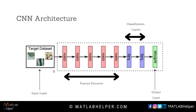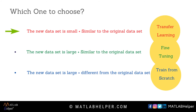Now let us see when to use transfer learning and when to use fine tuning. When our new dataset is small and similar to the original dataset, transfer learning is preferred. When the new dataset is large but similar to the original dataset, fine tuning is preferred. When the new dataset is large and different from the original dataset, we train the network from scratch. This is how we can decide and try to get the best CNN model.